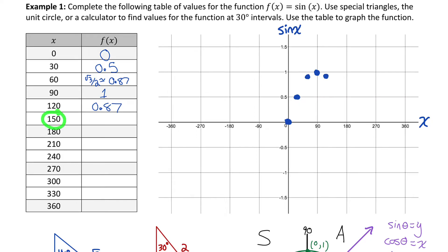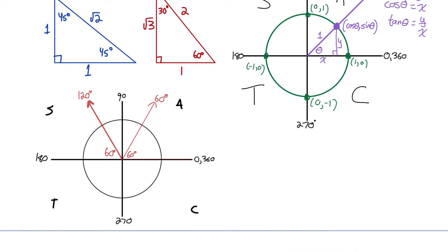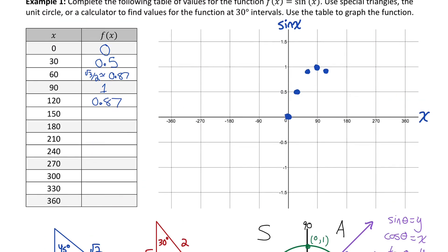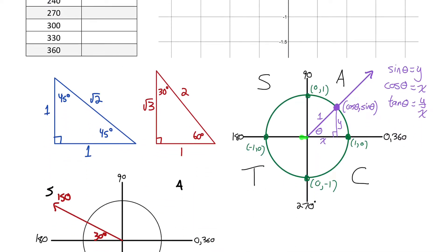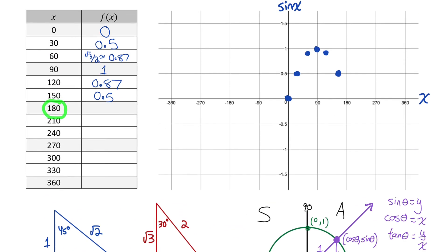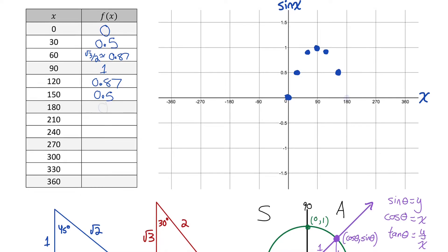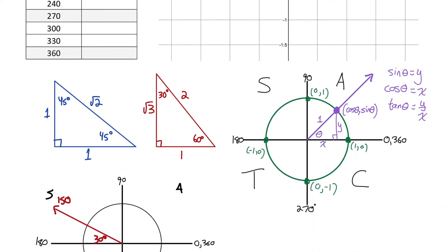Sine of 150: rotating 150 degrees gives a reference angle of 30, so sine of 150 equals sine of 30, which is 0.5. Sine of 180: rotating 180 degrees intersects the unit circle at a y-coordinate of 0, so sine 180 equals 0. Between 0 and 180 degrees, all the sine ratios were positive because we rotated through quadrants 1 and 2.